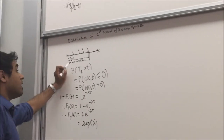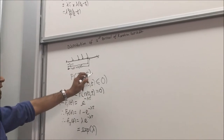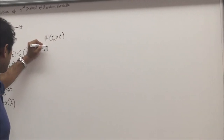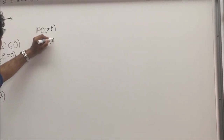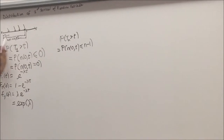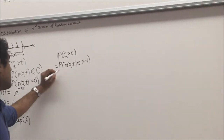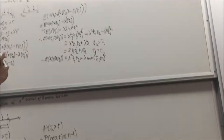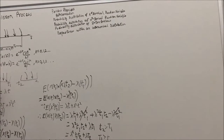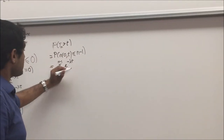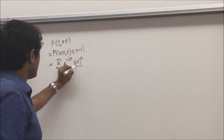Now we will be finding the distribution function for the nth arrival. That will be equal to P of tau_n greater than T, which is equal to P of N(0, T) less than or equal to N minus 1, because there will be N minus 1 arrivals before the nth interval. That will be equal to the summation of K equals 0 to N minus 1 of the Poisson density function, E raised to minus lambda T times lambda T raised to K by K factorial.